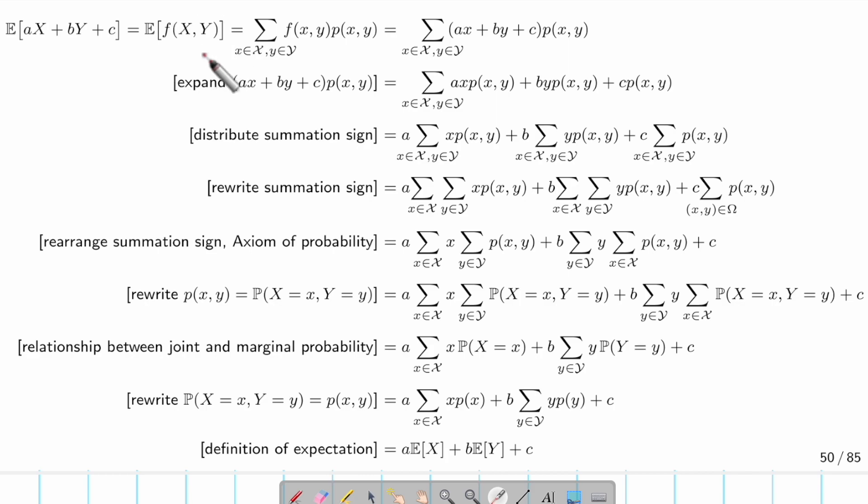Then we write down the definition. What's the definition of expected value under a function? It will be the function of the random variable multiply the corresponding probability over the whole sample space. So this is by definition.